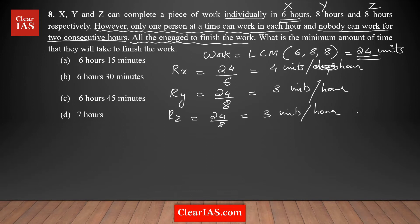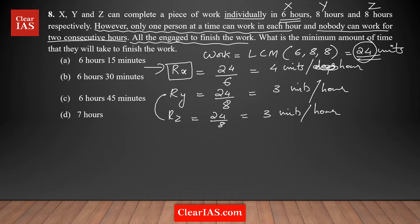Now we need a strategy to complete the total work in the minimum amount of time. X is the most efficient person, doing 4 units per hour, while Y and Z both do 3 units per hour. To minimize total time, we maximize the hours allocated to X, since X does more work per hour. So the strategy is to give X the maximum possible working hours.